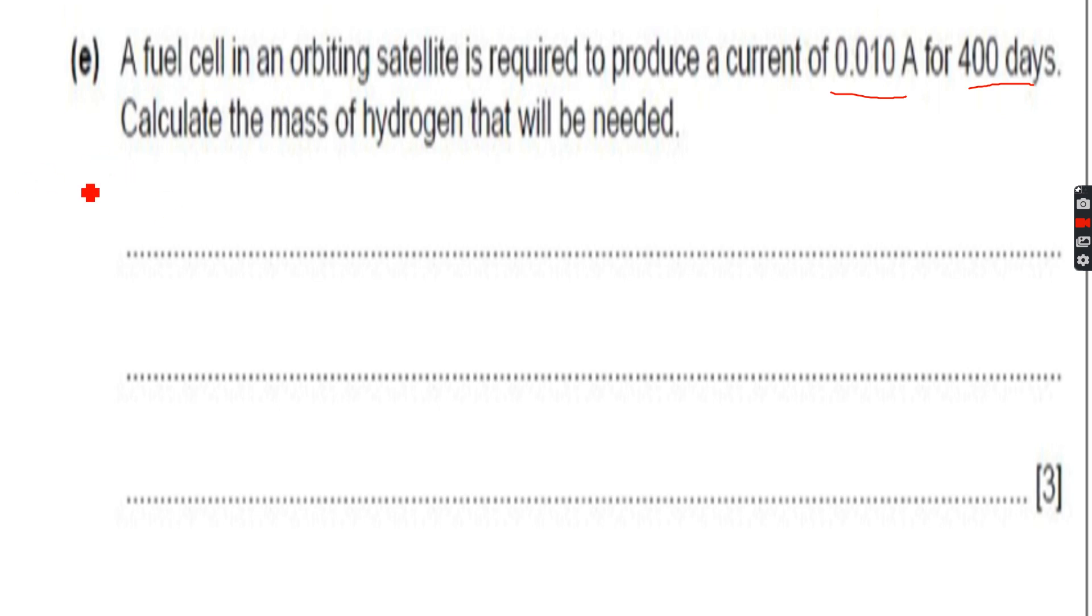Calculate the mass of hydrogen that will be needed. We have current and time, so Q equals I×t, which equals 0.01 into 400 into 24 into 60 into 60. We've converted days to seconds overall.